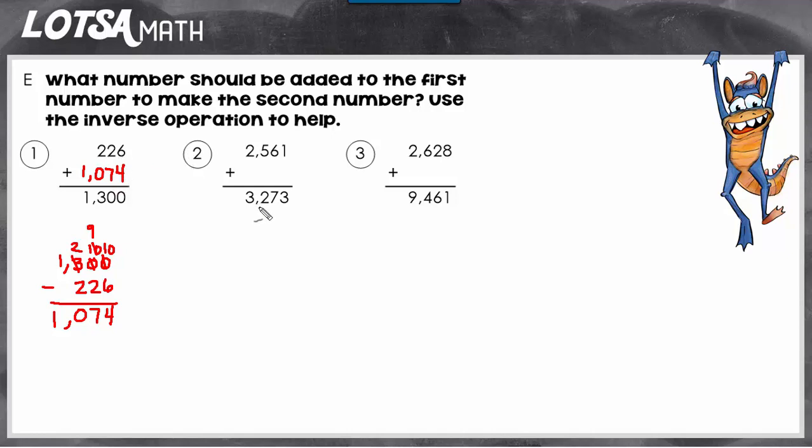Let's do number 2. We have 2,561 plus something equals 3,273. So I know by using the fact families I can create a subtraction number sentence. 3,273 minus 2,561 is going to give us the missing number. So the missing number is 712.